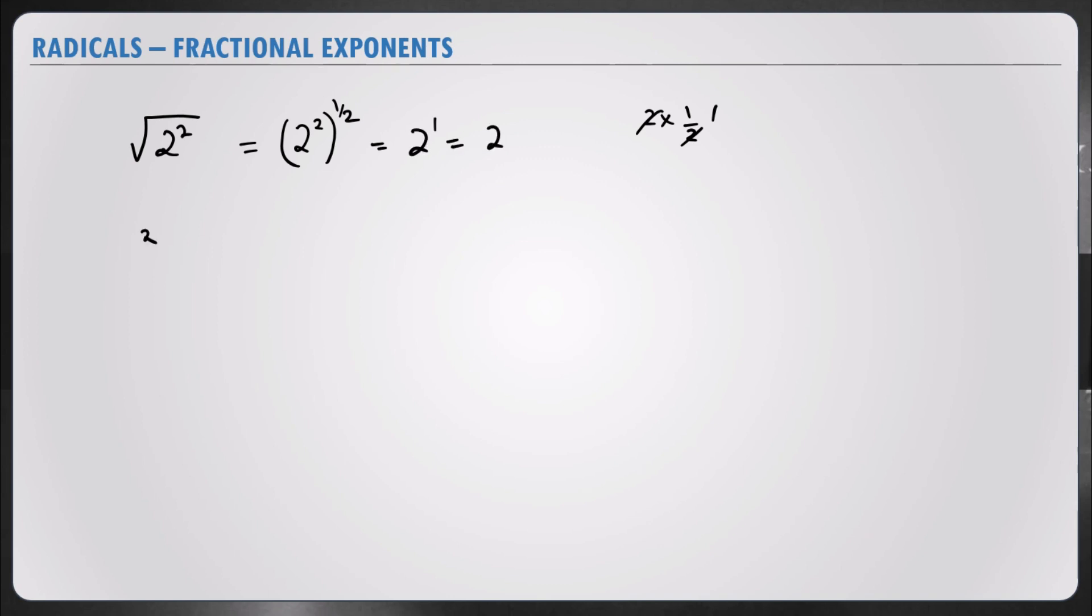The cube root of 3 cubed is equal to 3 to the power of 3 to the power of 1 over 3. Let's multiply the powers. And we get 1. So that's 3 to the power of 1, which is 3.